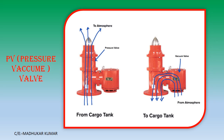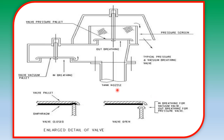Now we look at the pressure vacuum valve (PV valve). The main function of the PV valve is to prevent over-pressurization and under-pressurization. If over-pressurization occurs, the tank's flammable vapors and IG mixture press the valve, which lifts and releases pressure to the atmosphere. If vacuum occurs inside the tank, the valve lifts again and air enters the tank, preventing under-pressurization. The sketch shows the valve stem, valve plate for the pressure side, and the corresponding vacuum side.